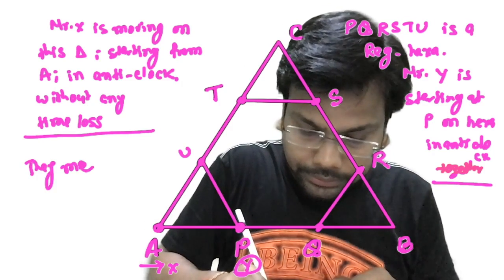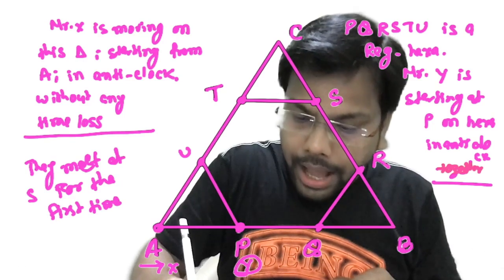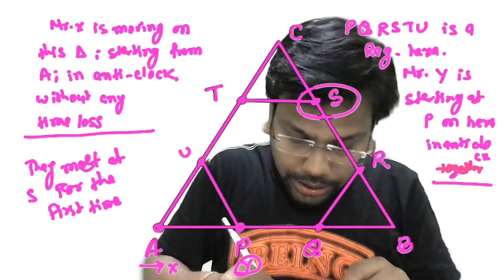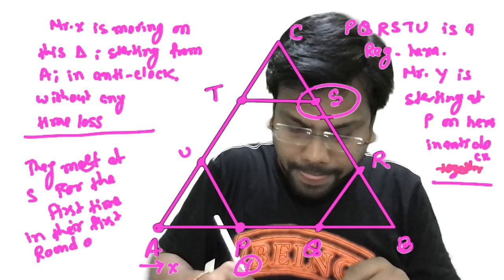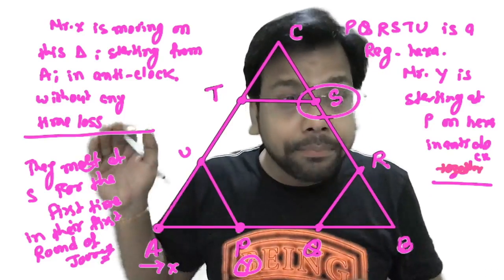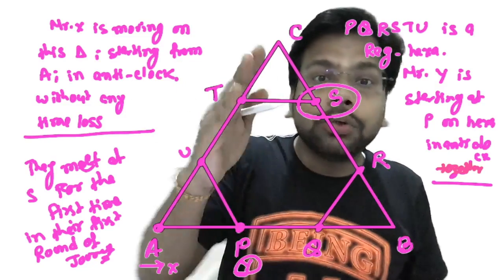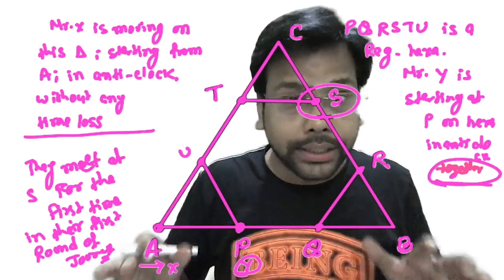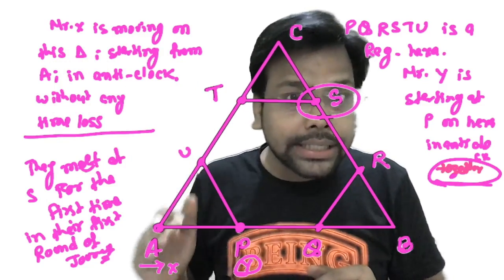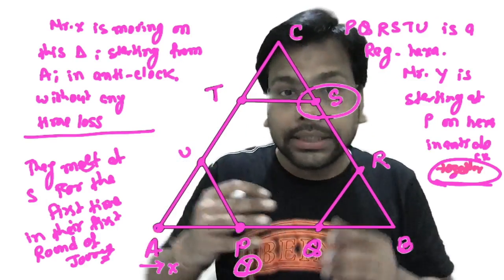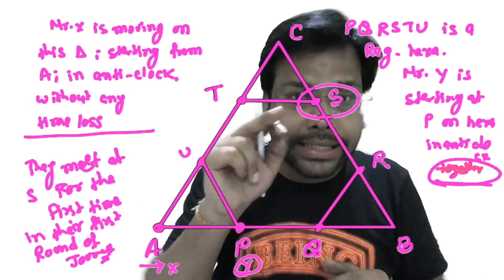I hope it is clear. Now I am going to ask questions. Before the questions, I am giving you one more information. They meet at S for the first time. At S they meet for the first time, and the information is in their first round of journey. Now the question is, they meet at S for the first time in their first round of journey. What do you mean by the first round of journey? The journey starts, they meet at S for the first time. They started together. So you have complete information with you. We have equilateral triangle and a regular hexagon. X starts from A, Y starts from P. They are both moving together, they started together and moving in the anti-clockwise directions, and they meet at S for the first time in their first journey.